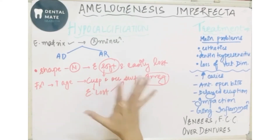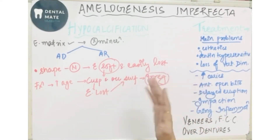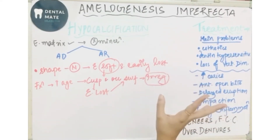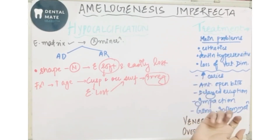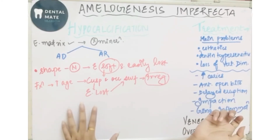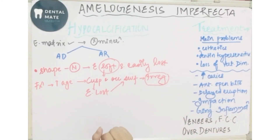The enamel is excessively soft and easily chips off with function. With increase in age, the cuspal area loses enamel and the occlusal surfaces become irregular. During eruption, when the tooth erupts...